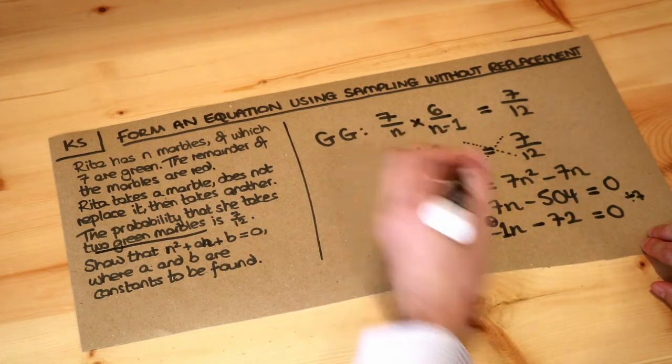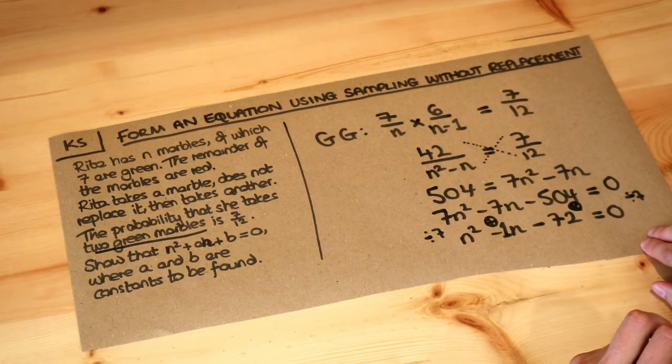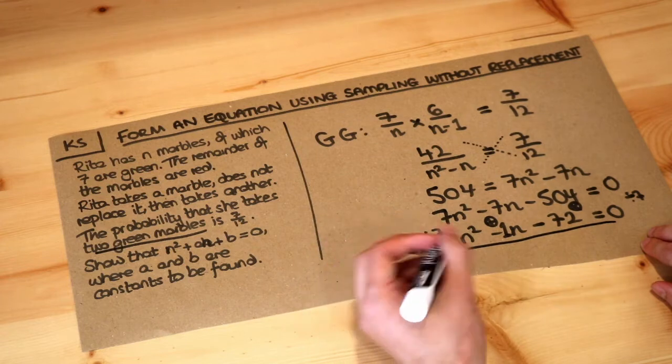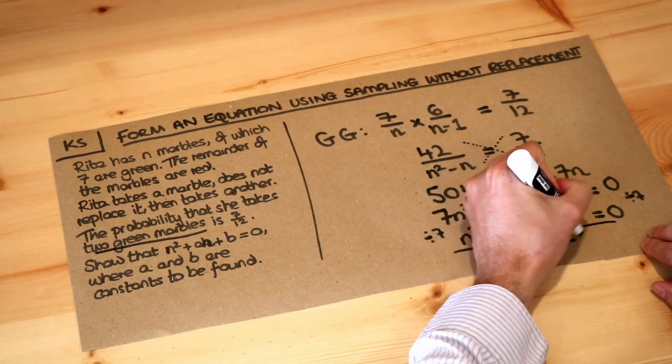So remember, we find two numbers that add to give minus 1 multiplied to give minus 72. What are those two numbers? Well, they're 8 and minus 9. So it's n plus 8, n minus 9 equals 0.